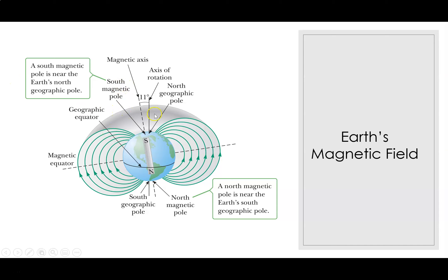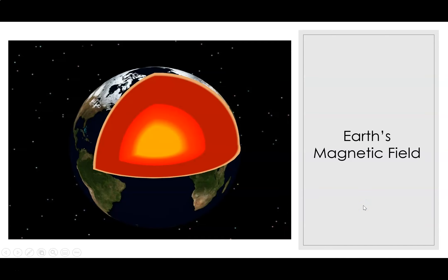Before this we said a bar magnet has north and south poles, but it is more accurate to say it has a north-seeking pole and a south-seeking pole. If a bar magnet is used as a compass, one end will seek or point to the geographic north pole of Earth and the other will seek the geographic south pole. From this we can conclude that the geographic north pole of Earth corresponds to a magnetic south pole, and the geographic south pole corresponds to a magnetic north pole.